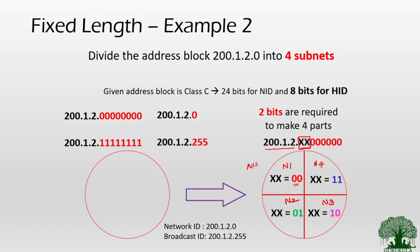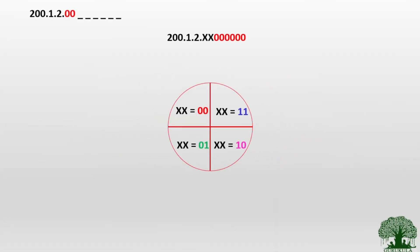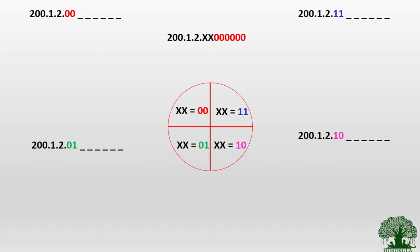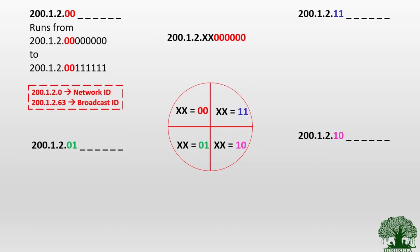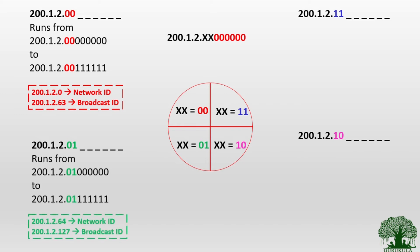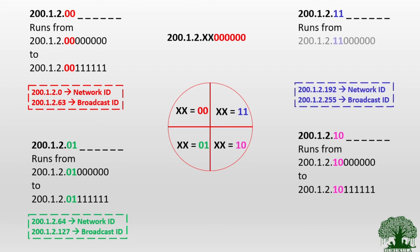We need to find the net ID and broadcast ID for each subnet. The first subnet freezes 00 and varies the remaining 6 bits from all zeros to all ones. The second subnet freezes 01 and varies the remaining bits. Similarly for 10 and 11. Only six bits are being varied for each subnet.